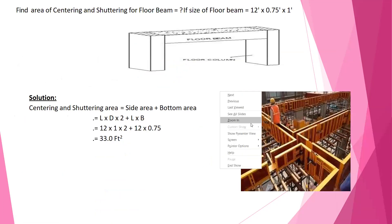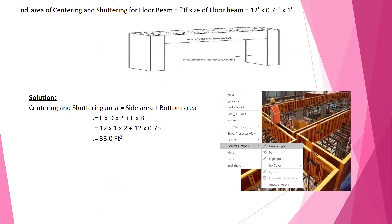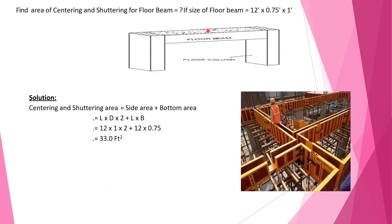For floor beam shuttering area, the floor beam is 12 feet by 9 inches (0.75) into 1 foot. The formula is: length into depth multiplied by 2, plus length into breadth — that is both sides plus the bottom area. That means 12 into 1 into 2, plus 12 into 0.75, that is 33 square feet. This side is the two sides and this is the bottom.